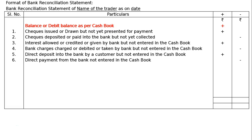Sixth item: direct payment from the bank not entered in the cash book. Sometimes the trader instructs the bank to pay directly from his account to clients or for outstanding payments and other expenses. Hence the bank deducts it from the passbook and pays. It was not recorded in the cash book, so these amounts are to be deducted from the cash book balance to find the correct passbook balance.